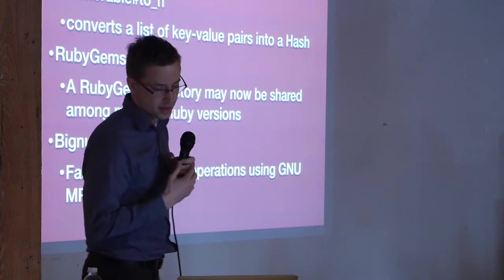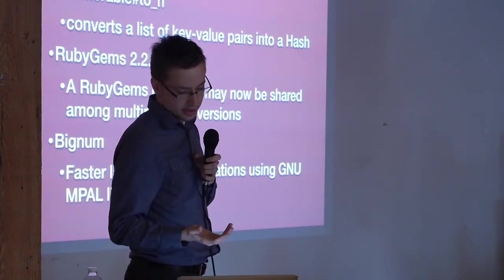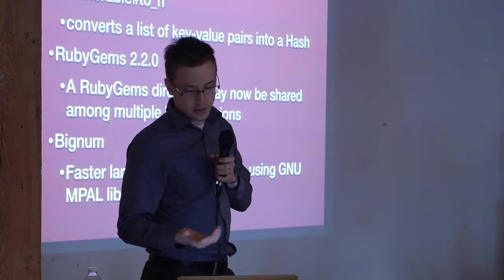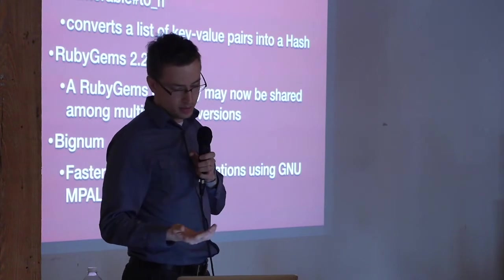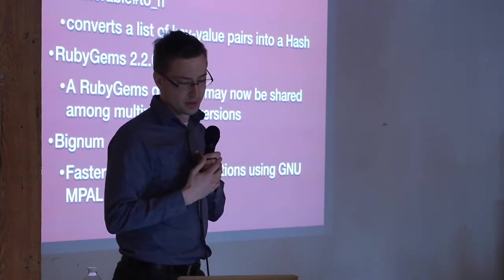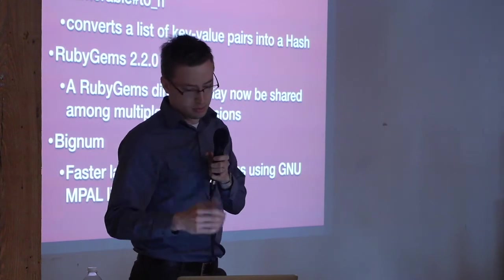Some other changes, you have a to_h method, which can convert a list of key value pairs into a hash, a new RubyGems version, and a bignum.